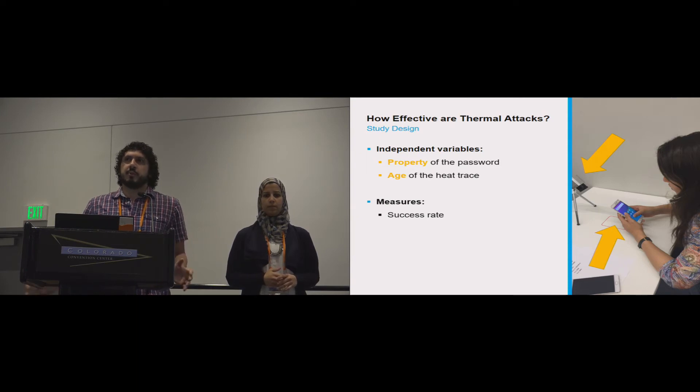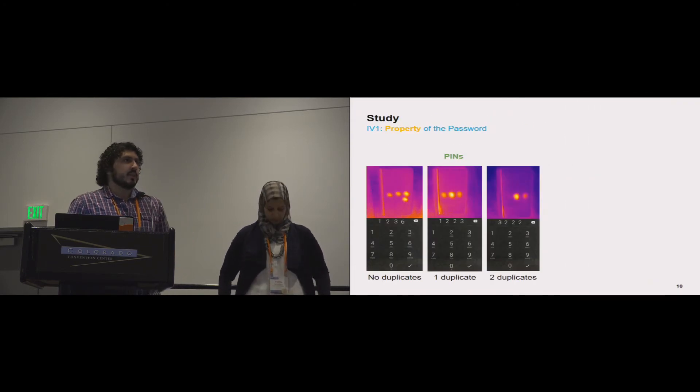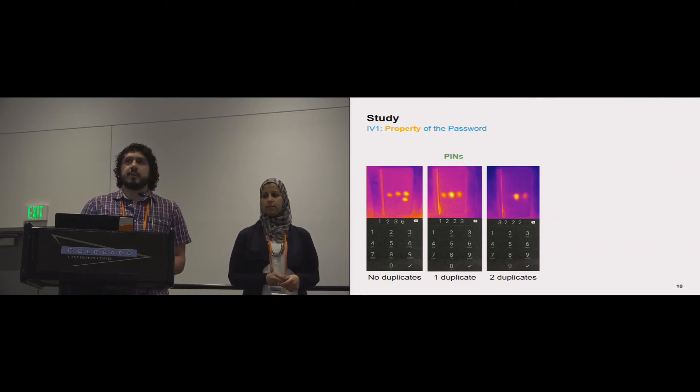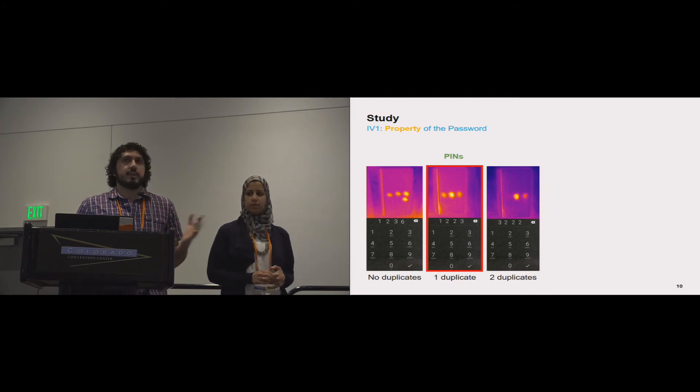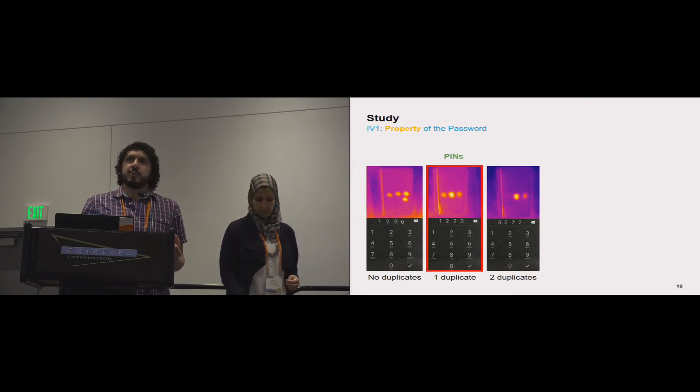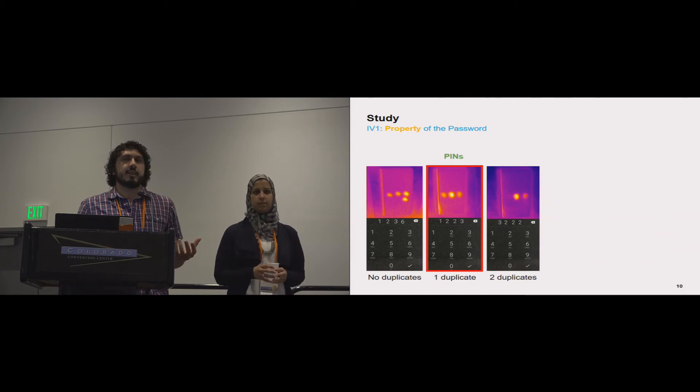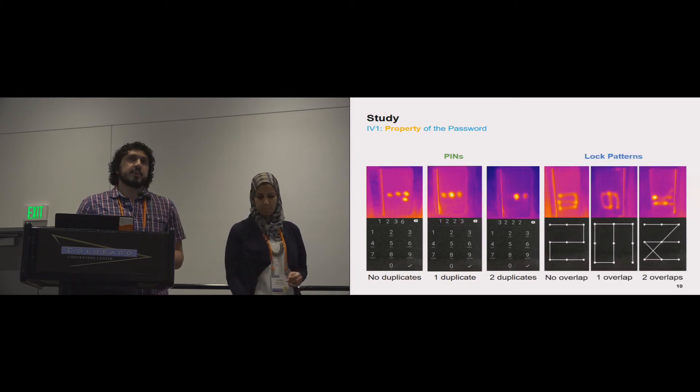The first variable in the study was the property of the password. For the PIN, we investigated the effect of having duplicate digits in the PIN. If you look at this image in the middle, it's really difficult to know with the naked eye whether the digit in the middle was pressed once or twice, or whether it's the last one. But we wanted to see if touching a digit twice distorts the heat traces and if this actually makes thermal attacks harder to perform or easier. For the lock patterns, we investigated the effect of having overlaps. An overlap is basically when your finger swipes over a node that was previously selected. Here's an example of some overlaps in these pictures.